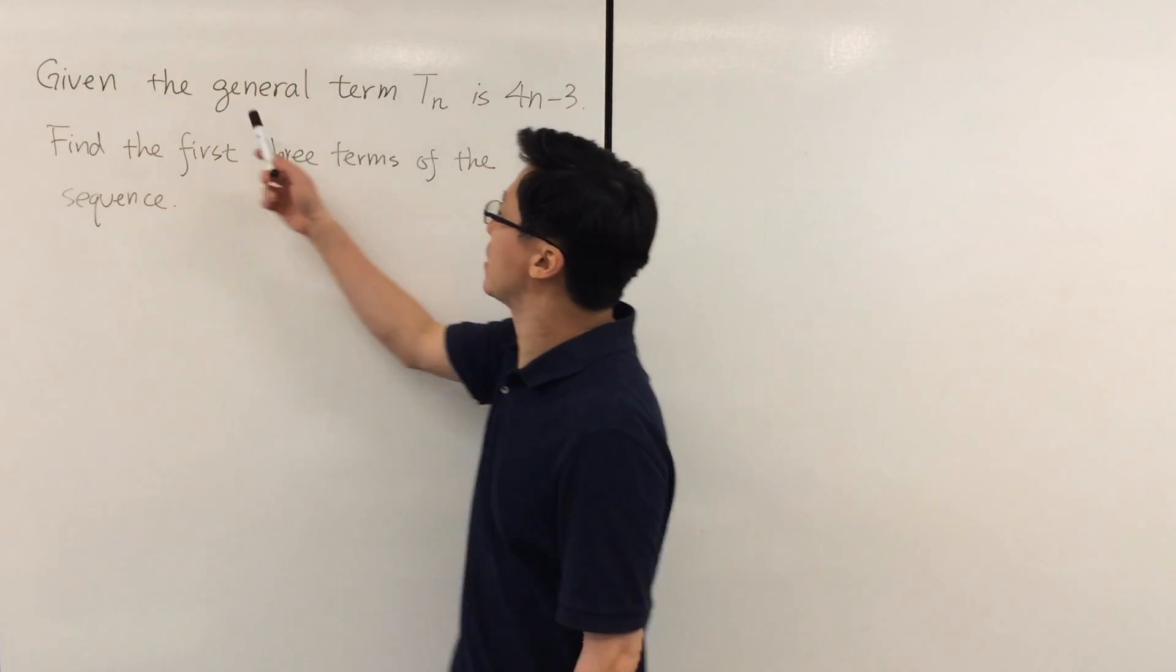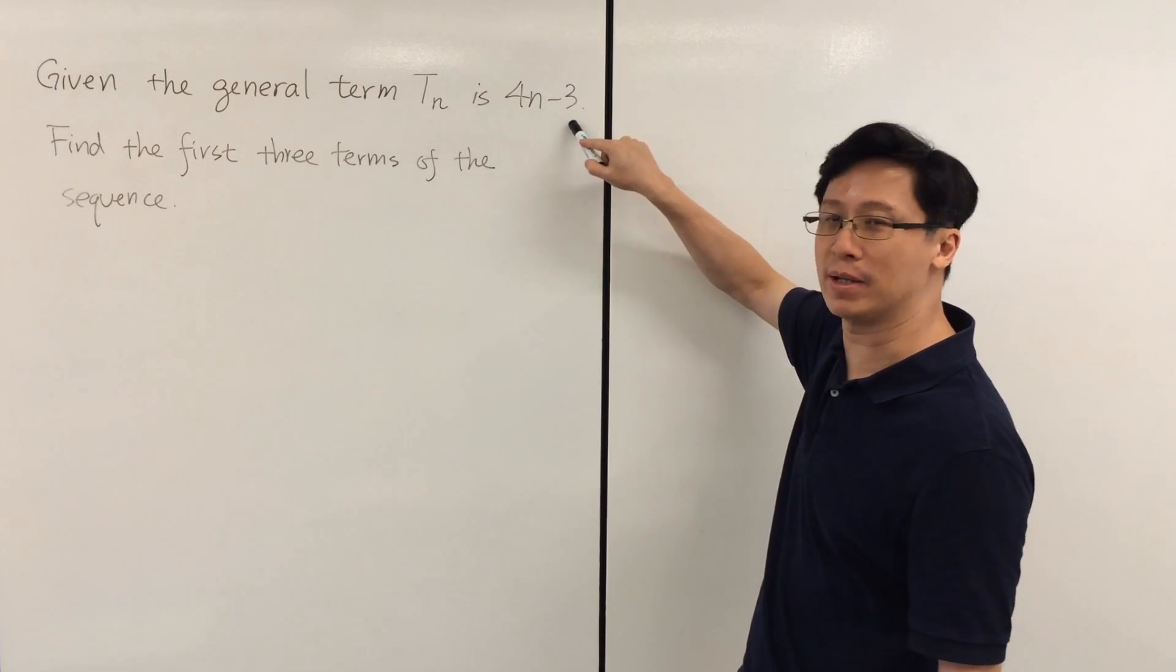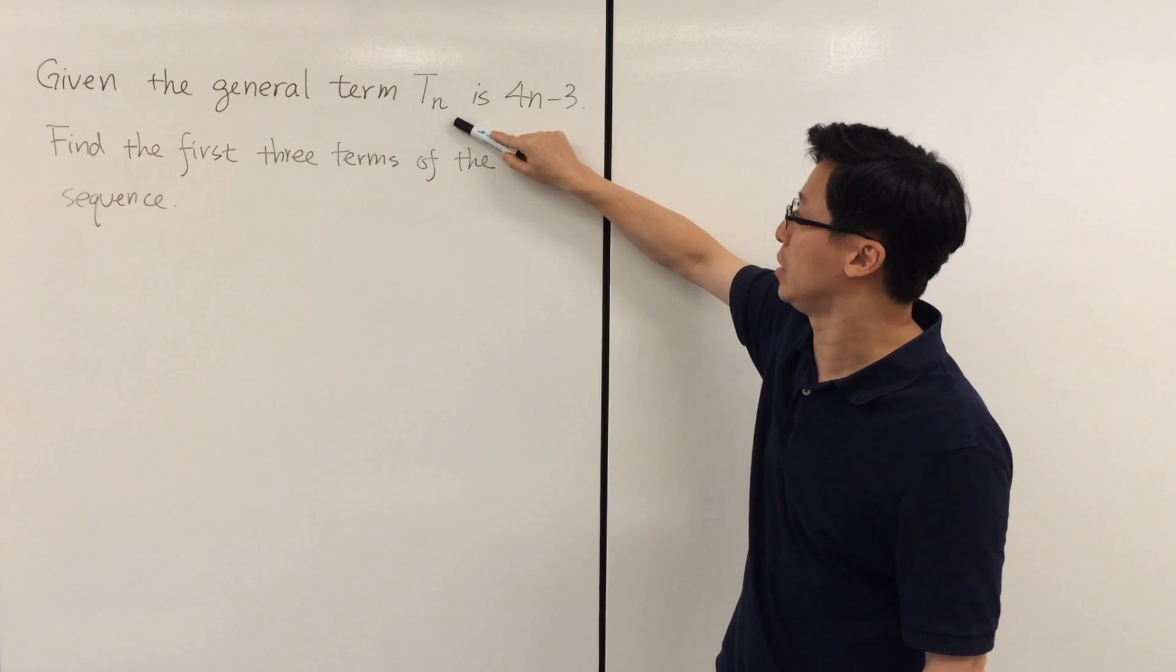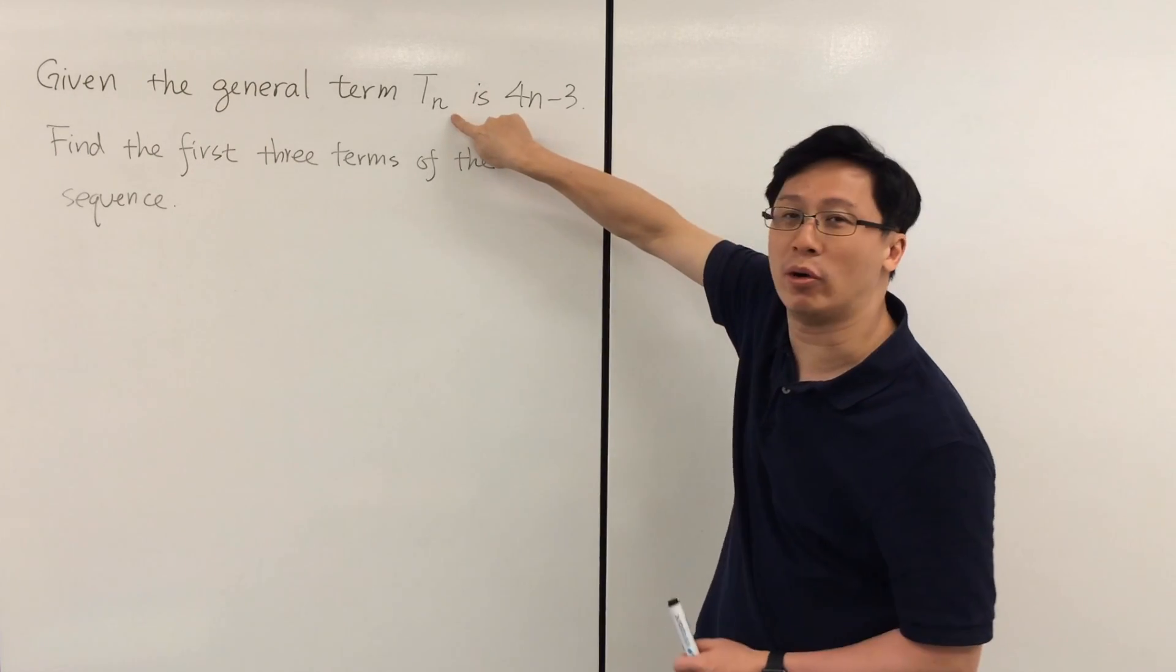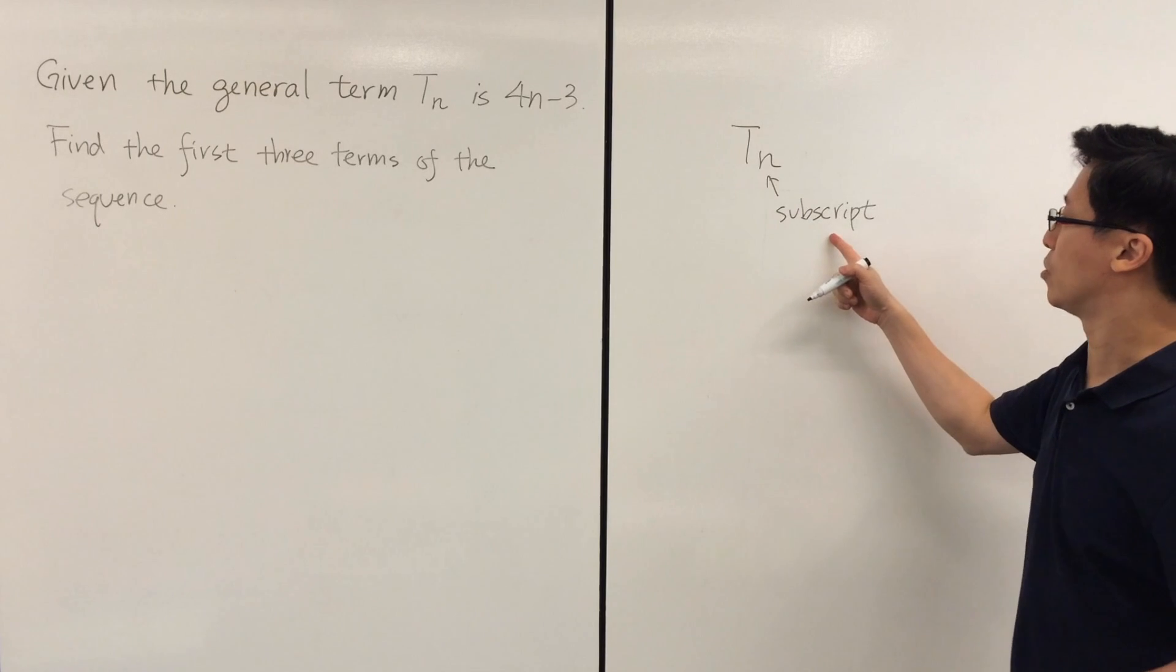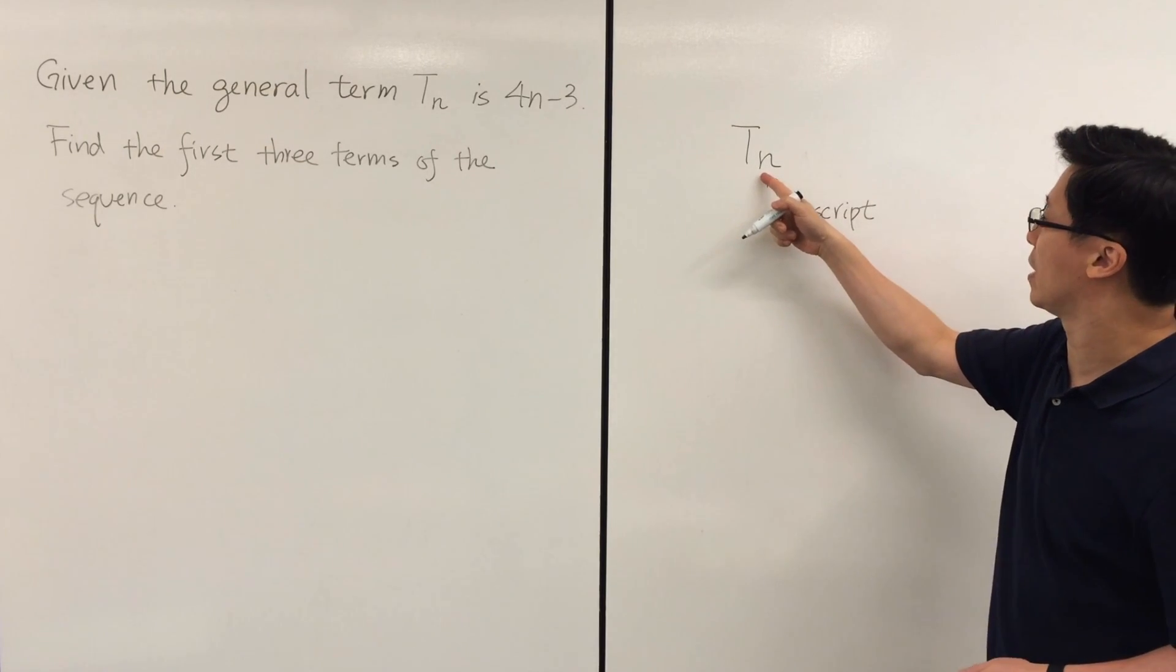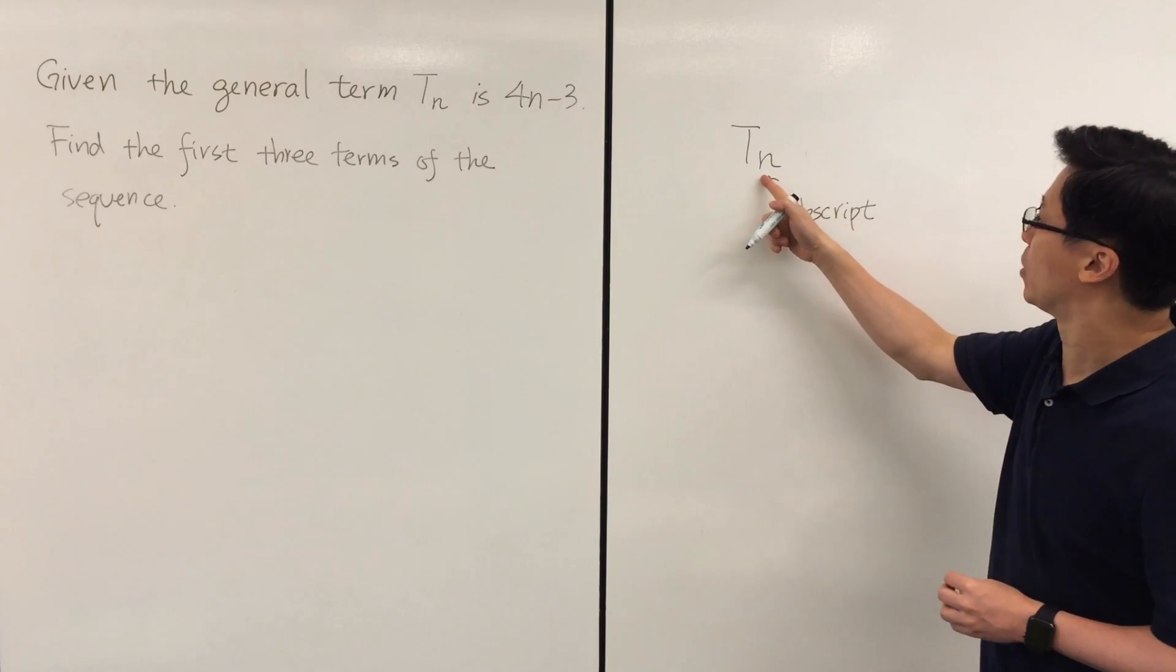Now we can look at an example. Given the general term is 4n minus 3, we write the general term in this way: T subscript n. This is a small letter n written in the subscript position. This is called the subscript - that is, write the letter n, make it smaller, at the lower bottom position of the letter T.